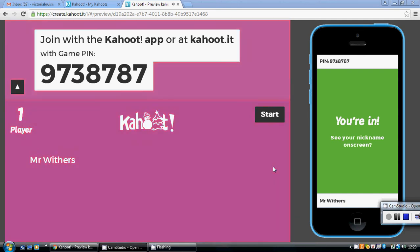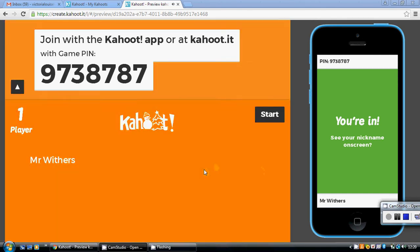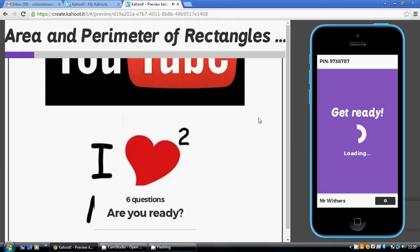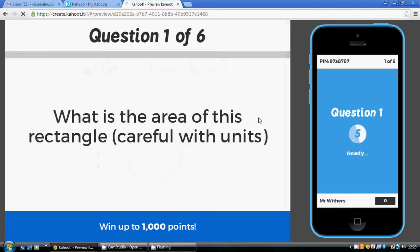This Kahoot looks at working out the area and perimeter of rectangles and triangles. I don't suggest you watch this video until you've tried the Kahoot itself, just follow the link below for that. So question one...